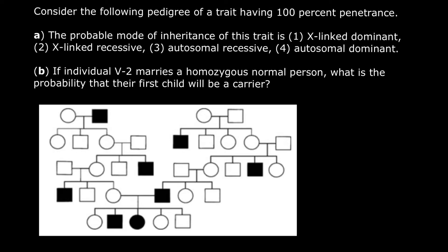Question A: the probable mode of inheritance of this trait is — and we have to choose from X-linked dominant, X-linked recessive, autosomal recessive, and autosomal dominant.